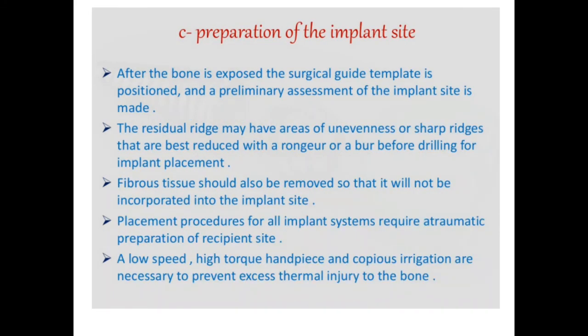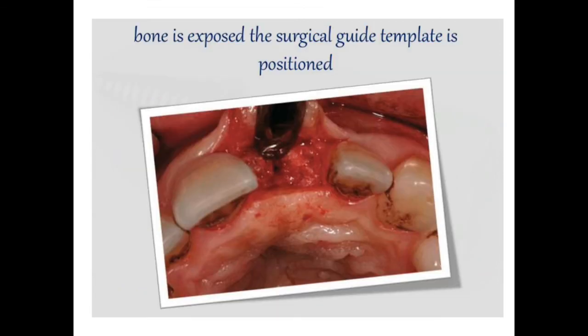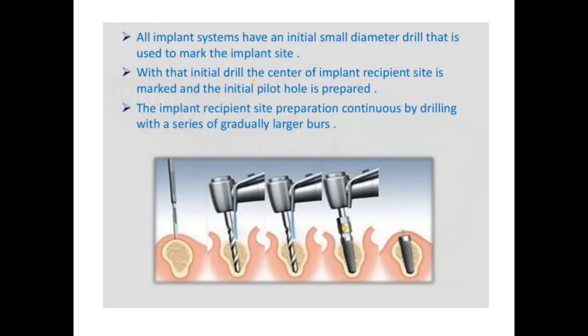Once the incision is given, raise the flap, prepare the bone, flatten the bone if necessary, and create a good bed for implant placement, then start drilling. This is a sequential osteotomy — first the incision, then the lancet drill, then osteotomy drills one and two, and finally place the implant according to the last drill size. This is sequential osteotomy, and this slide shows the final placement.